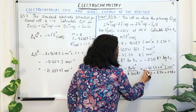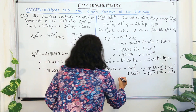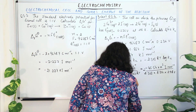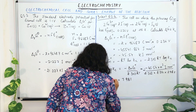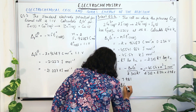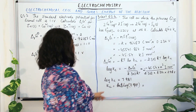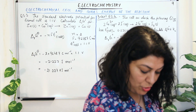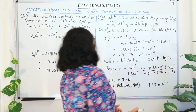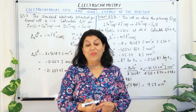So the overall value is positive and equals 7.981. Therefore, log Kc = 7.981. To find Kc, we take the antilog of 7.981, which gives Kc = 9.57 × 10⁷.